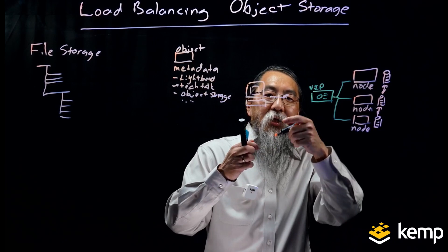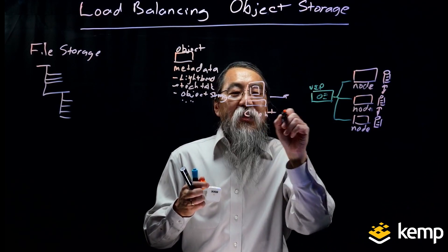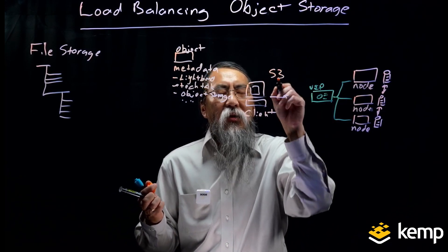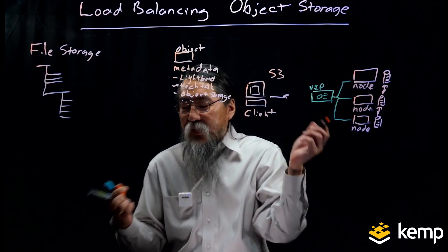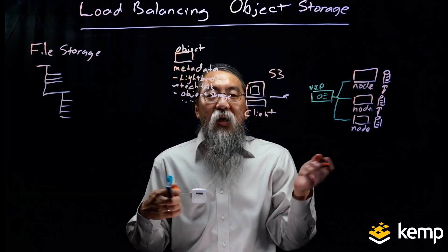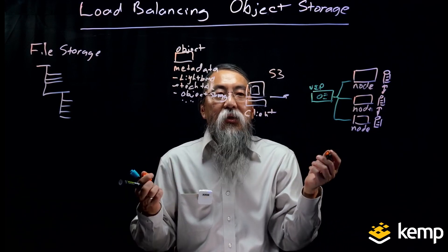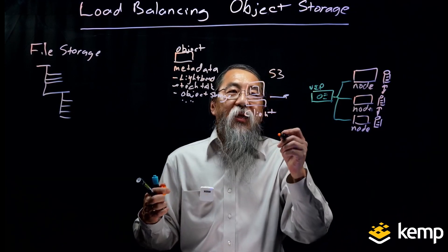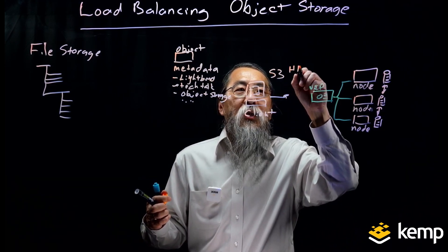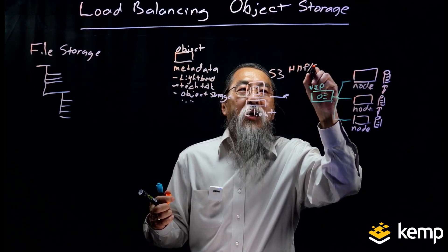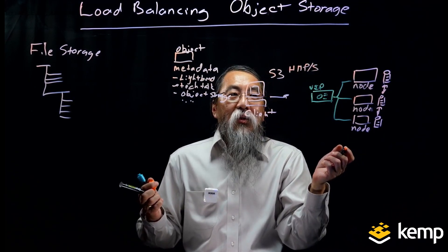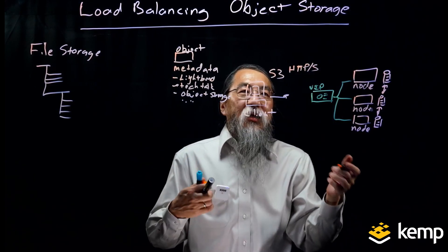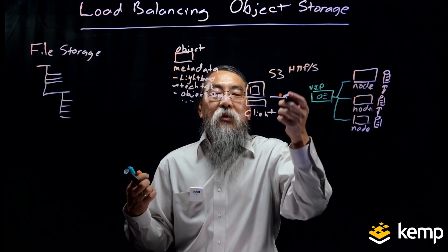The protocol that clients use to access the nodes — the most common one — is called S3. Almost everybody uses S3. S3 stands for Simple Store Service. It was created by Amazon with AWS many years ago and is a very popular protocol for object storage. The really cool thing is that S3 uses HTTP, or HTTPS if it's encrypted. As a load balancer, we think: it's HTTP — I can do all the things load balancing does for HTTP, and now do it for object storage and S3.